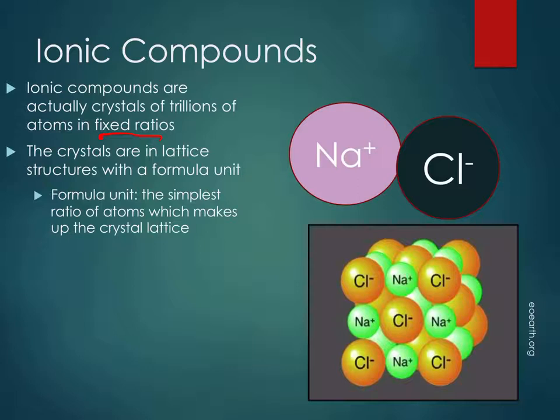The crystals in the lattice structure, we refer to them by the formula unit, and that formula unit is that fixed ratio. So that's the simplest ratio of atoms which make up the crystal lattice. And so here is our crystal structure of sodium chloride. We refer to it as NaCl because that's going to be the reduced form, the simplest ratio that makes up that lattice. And so it lets us know how many of each are in it based on the charges.